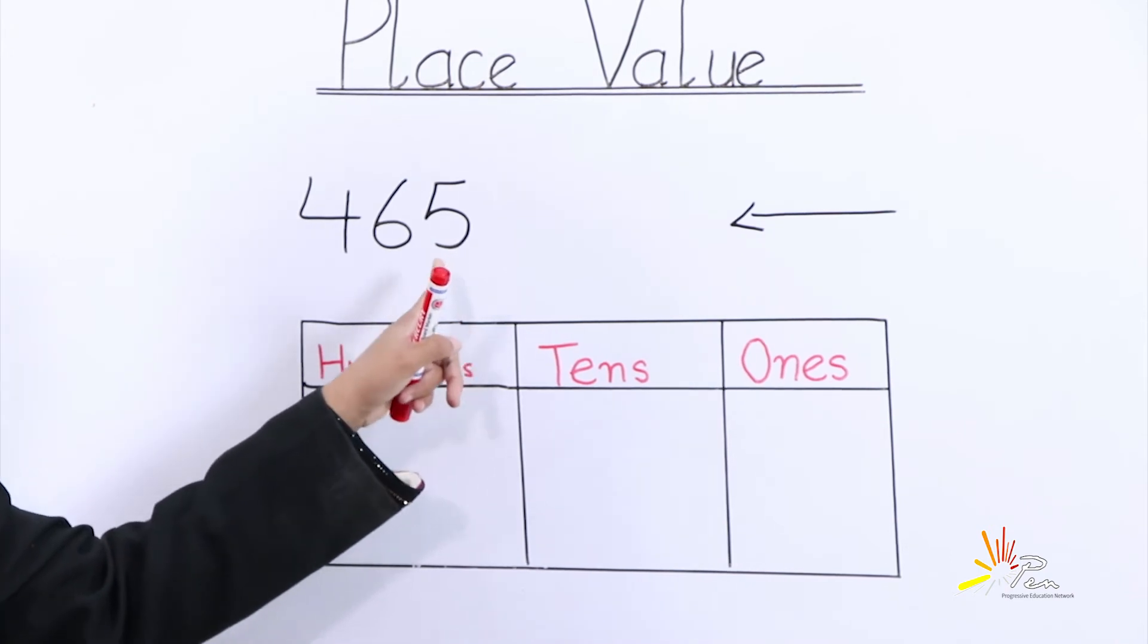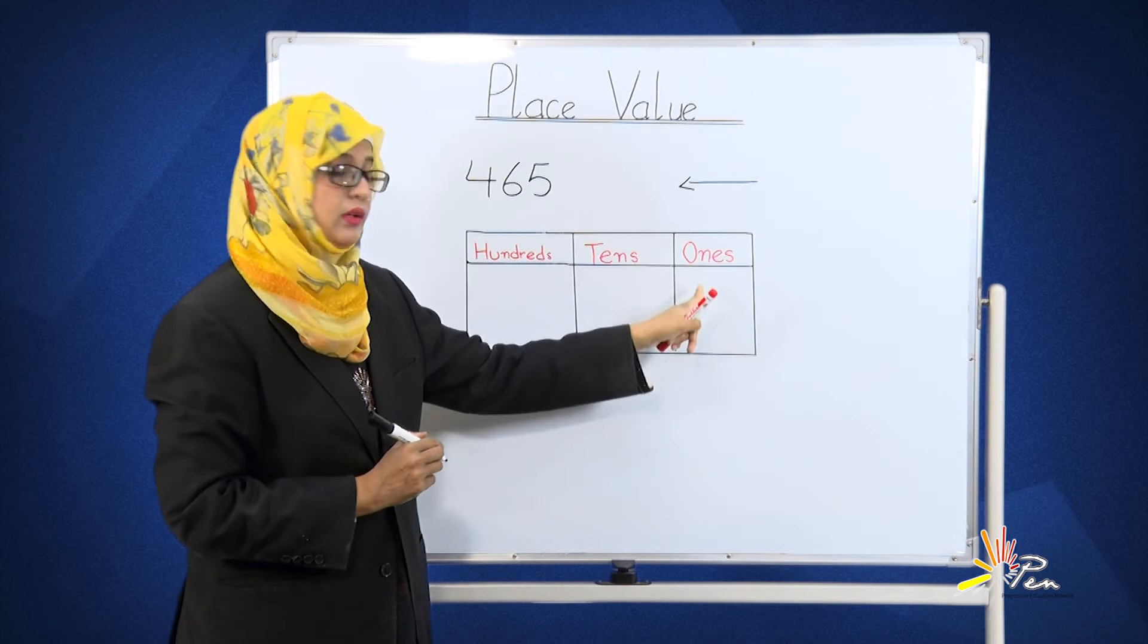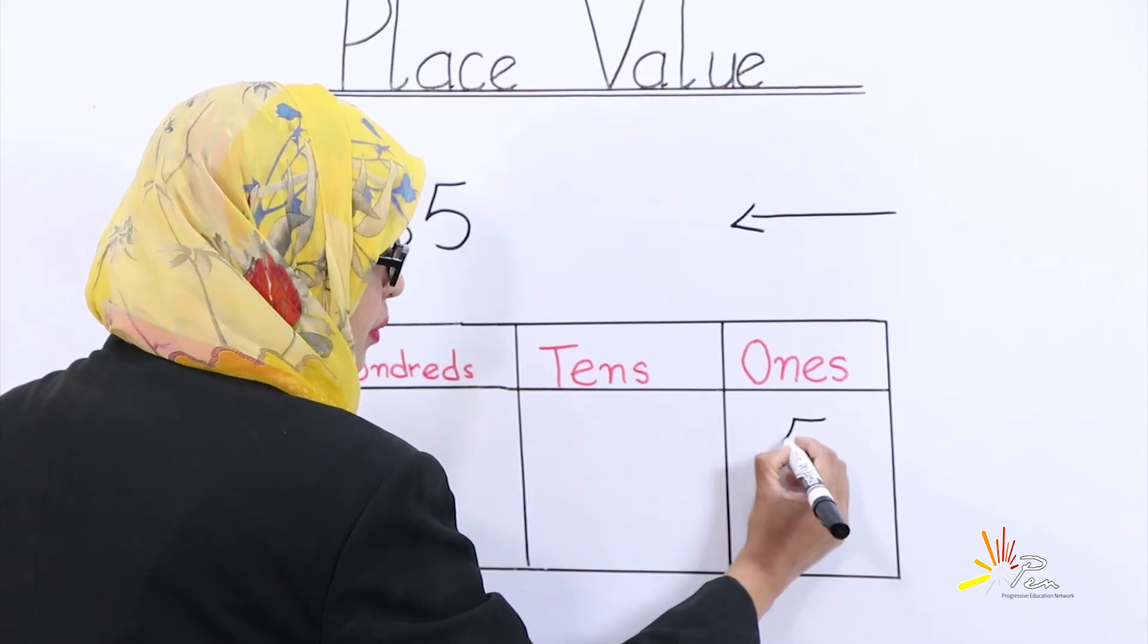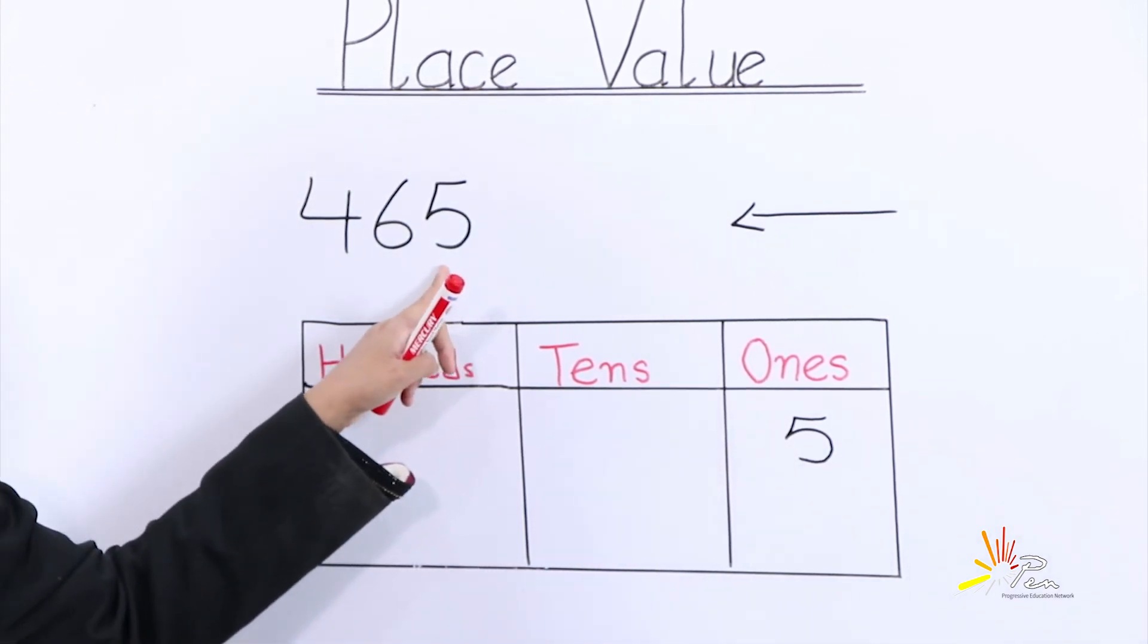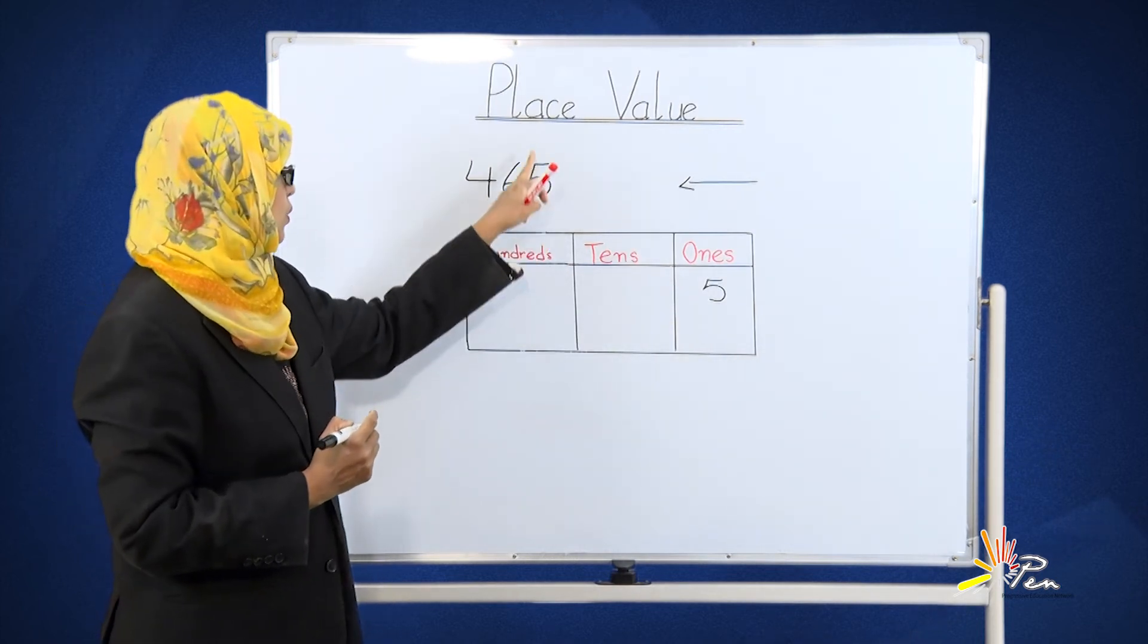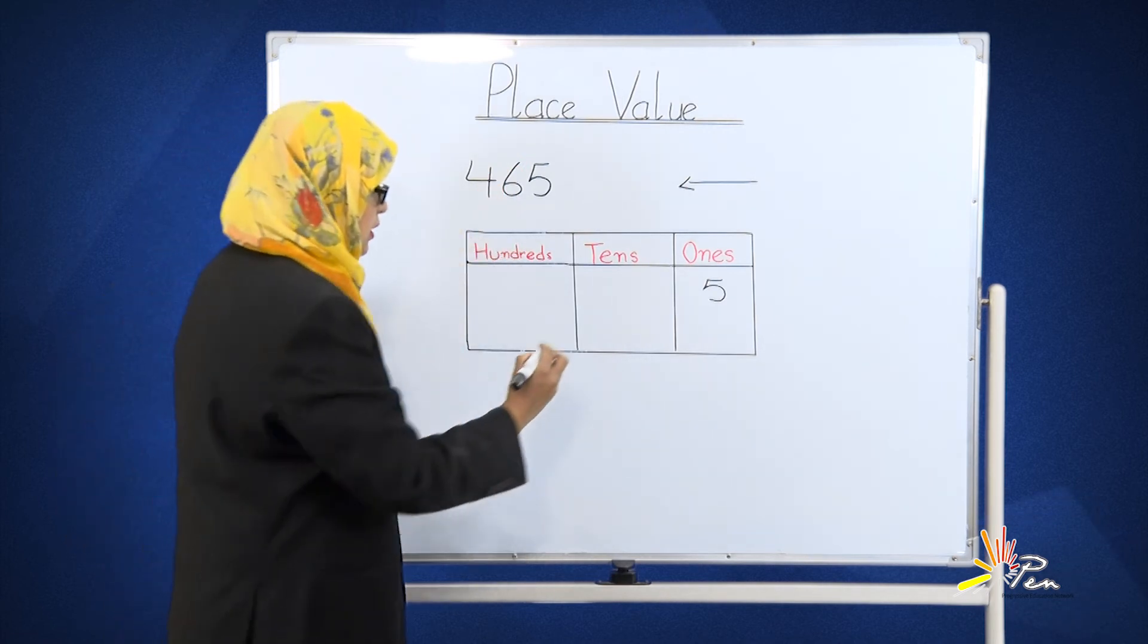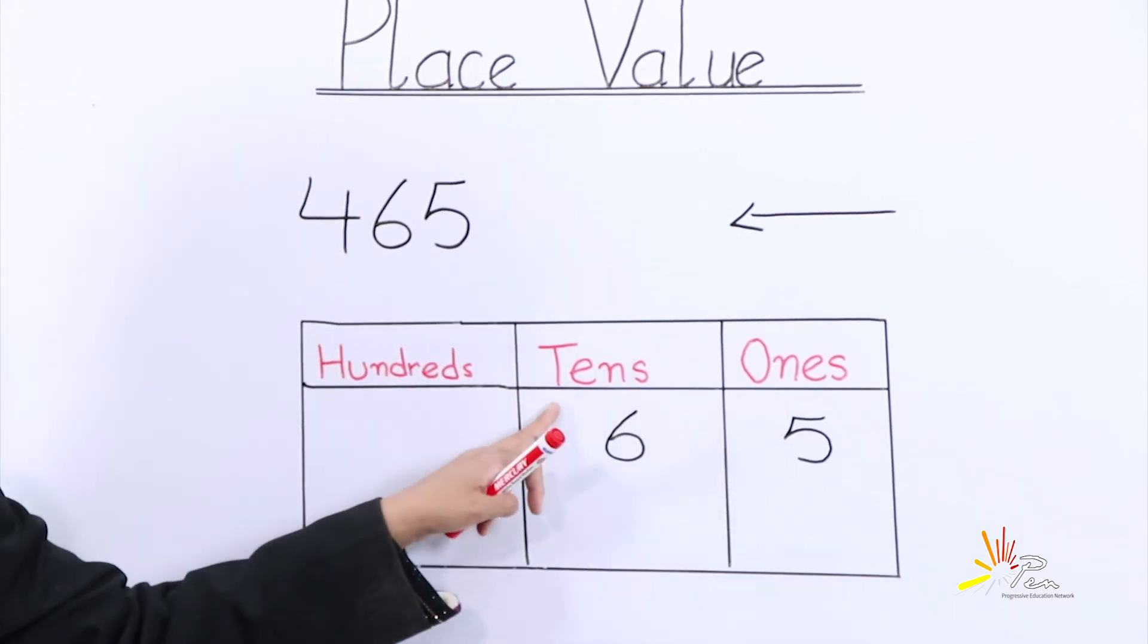Where will this number be written? In the box of ones. We will write five in the box of ones. We have five on the ones place. The other number is six. Six will be written in the box of tens. It is the home of tens.